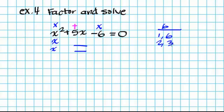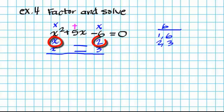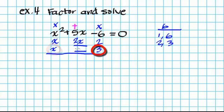I know the center terms have to add up to 5x, but the last term has to multiply up to negative 6. Let's try 2 and 3: x times 2 is 2x, x times 3 is 3x. I can add these up to positive 5x, but the last two terms do not multiply up to negative 6, so this isn't going to work.